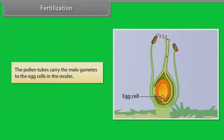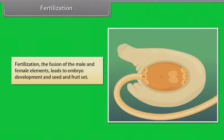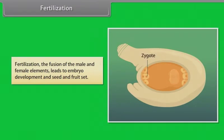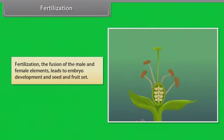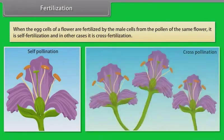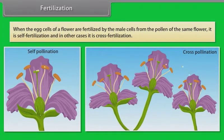The pollen tubes carry the male gametes to the egg cells in the ovules. Fertilization, the fusion of the male and female elements, leads to embryo development and seed and fruit set. When the egg cells of a flower are fertilized by the male cells from pollen of the same flower, it is self-fertilization; in other cases it is cross-fertilization.